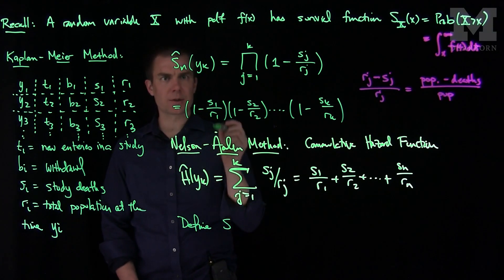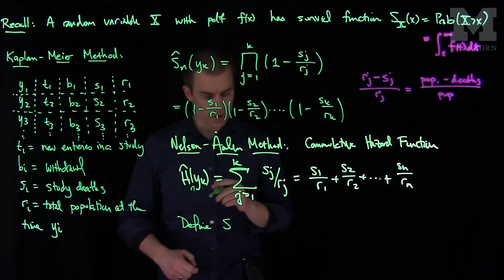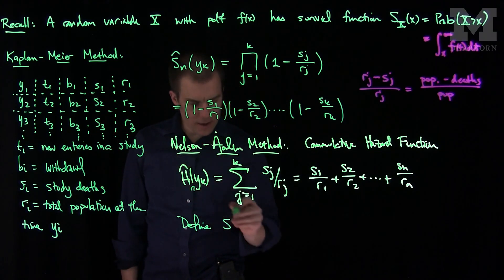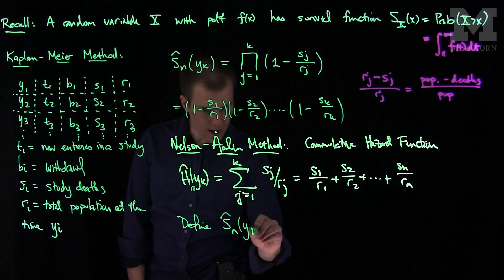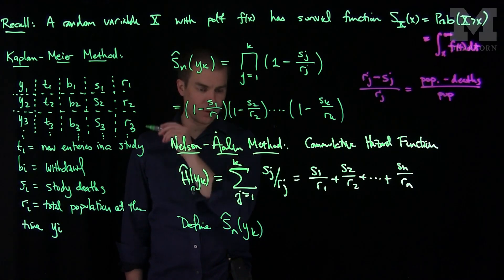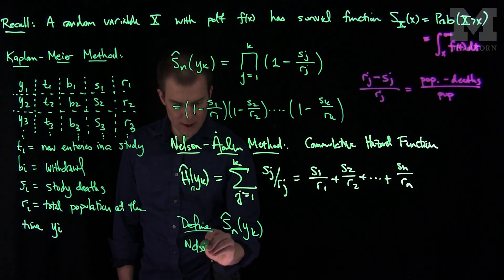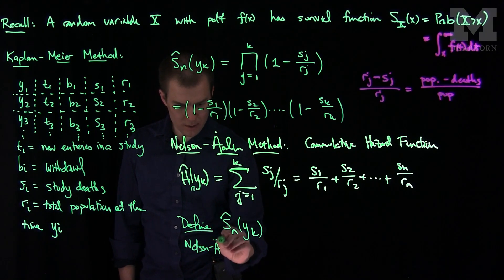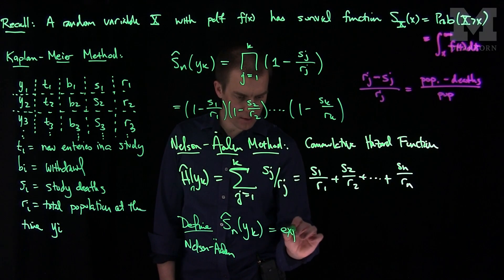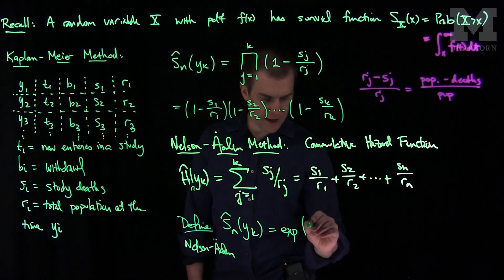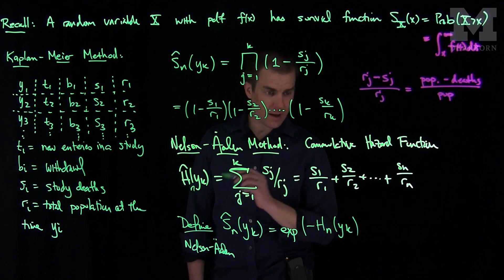We can define S_n hat of y_k, another approximation of the survival function, and this will be the Nelson-Aalen estimate, as the exponential of this cumulative hazard function, negative H_n of y_k.